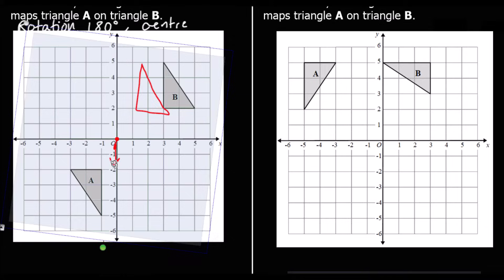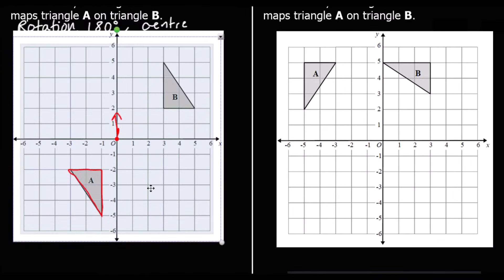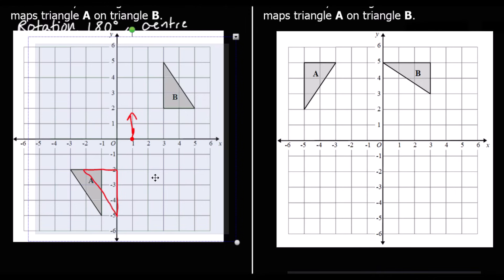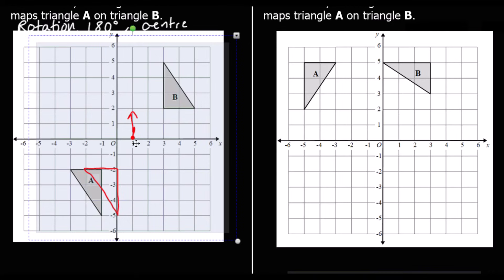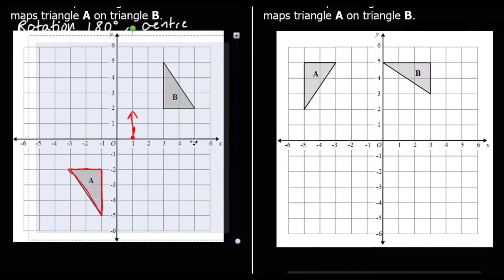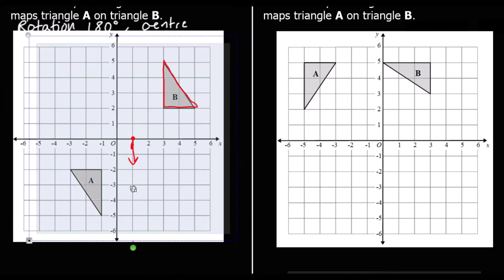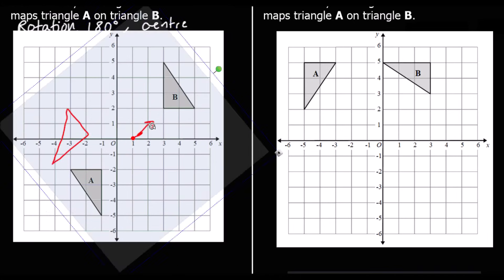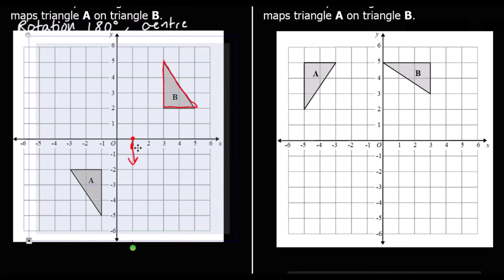So I'm going to move it. If I try from (1, 0) and hold my tracing paper at (1, 0) and rotate it, we can see it goes onto shape B. So the centre, this time, is at (1, 0).